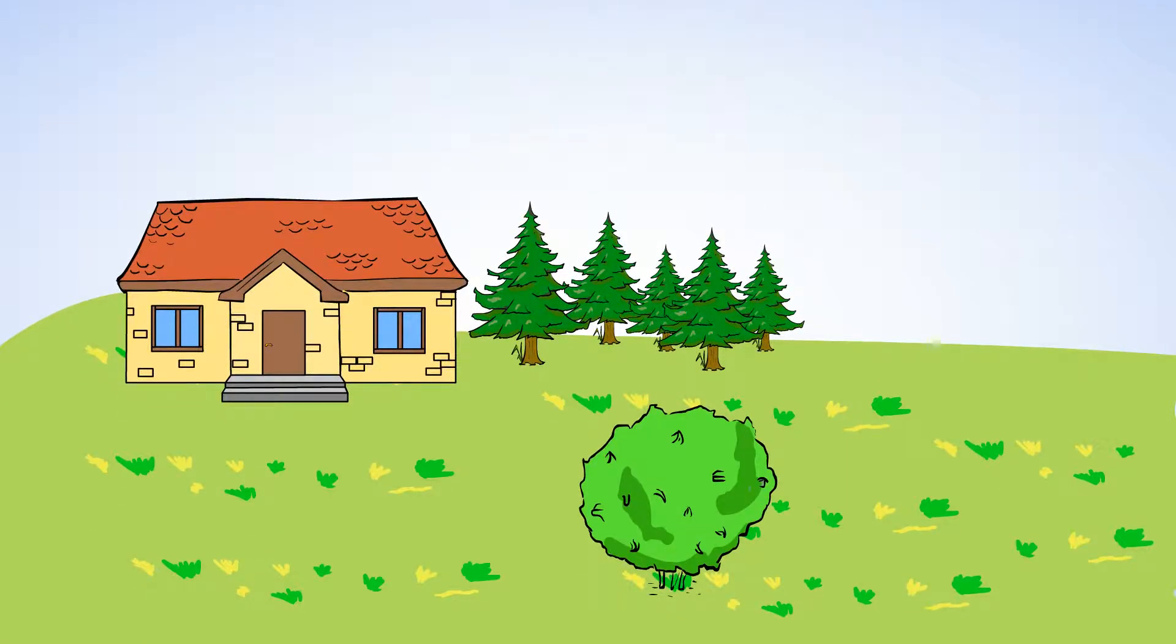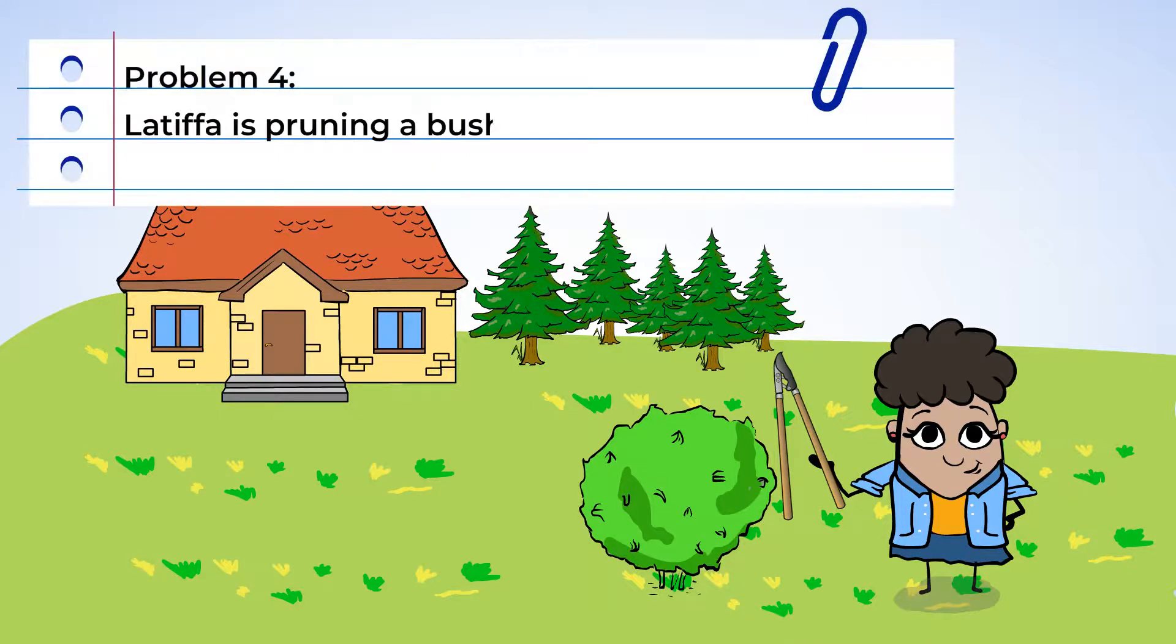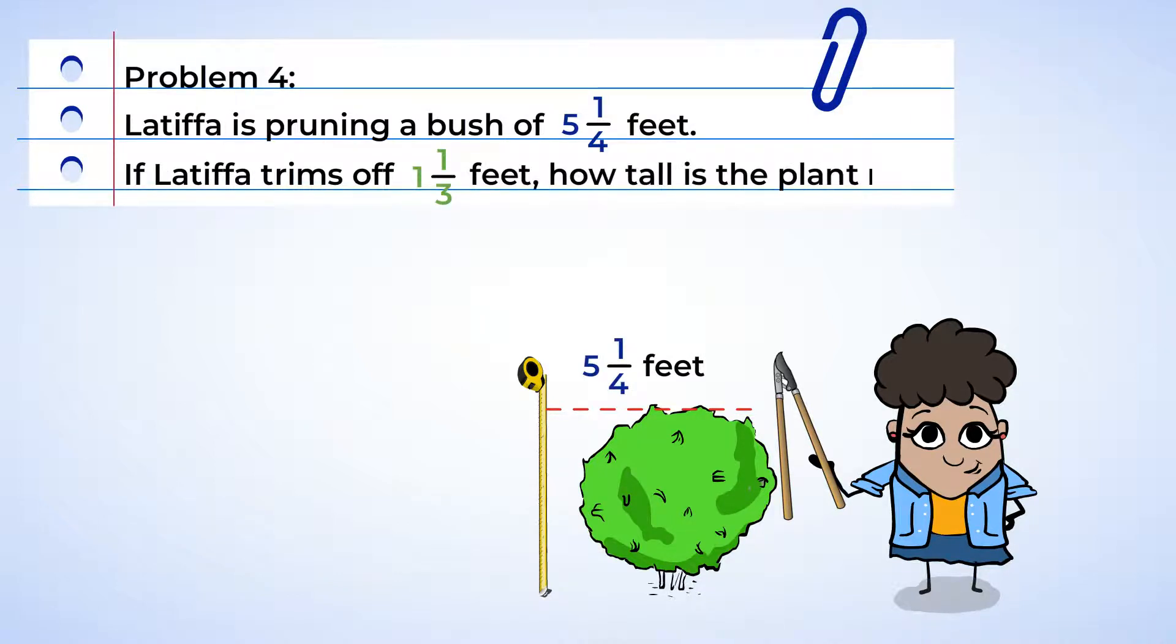The weather is still so nice. What do you say we spend a little bit more time outside and help Latifah in the garden? Latifah is pruning her plants. A bush has a height of five and one fourth feet. If Latifah trims off one and one third feet, how tall is the plant now?